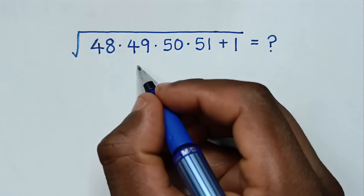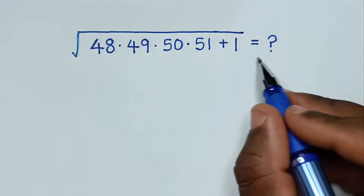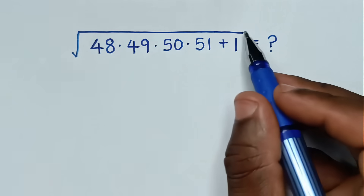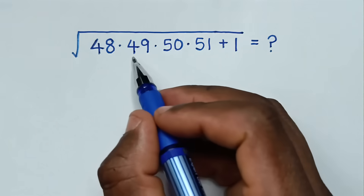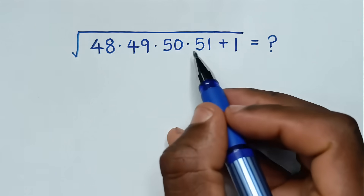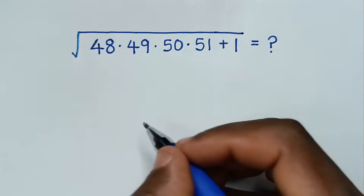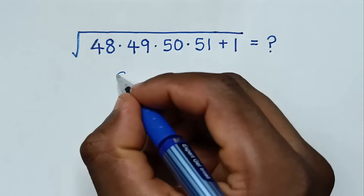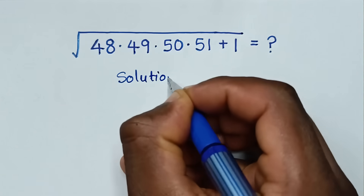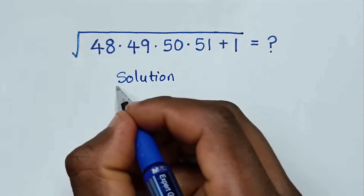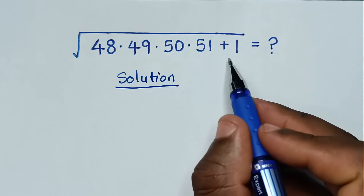Hello, you are welcome to solve this math problem, which is the square root of 48 times 49 times 50 times 51 plus 1. To solve this problem we have two methods.